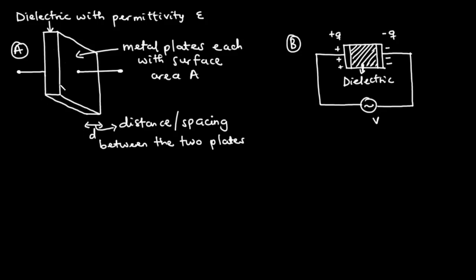The metallic plates are usually made of aluminum foil, whereas the insulator or dielectric material is usually air, paper, ceramic, and so forth. So basically a capacitor has two metallic plates separated by a dielectric material, and the spacing between the two plates is D.